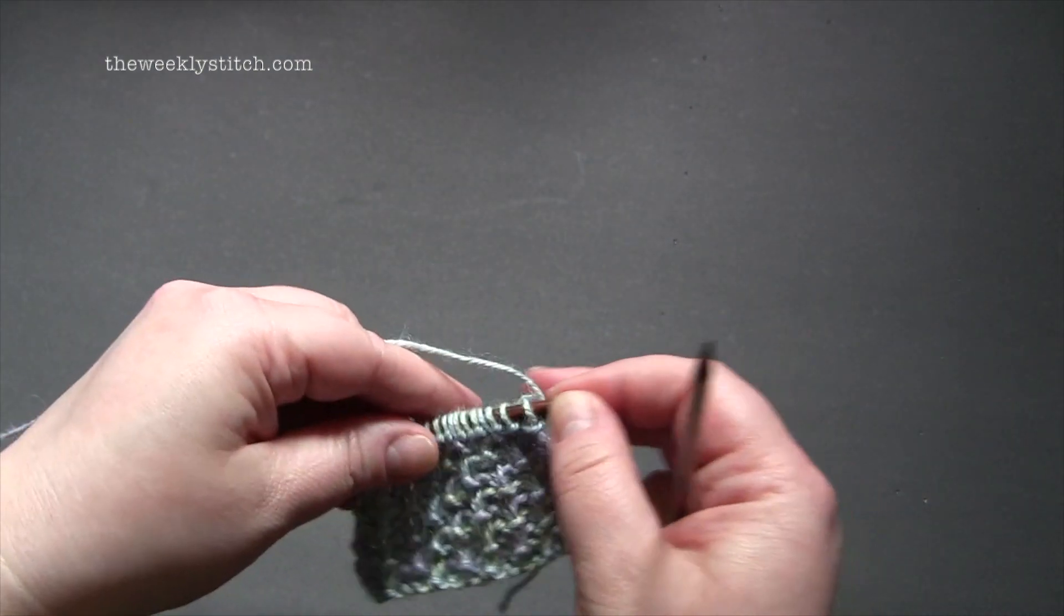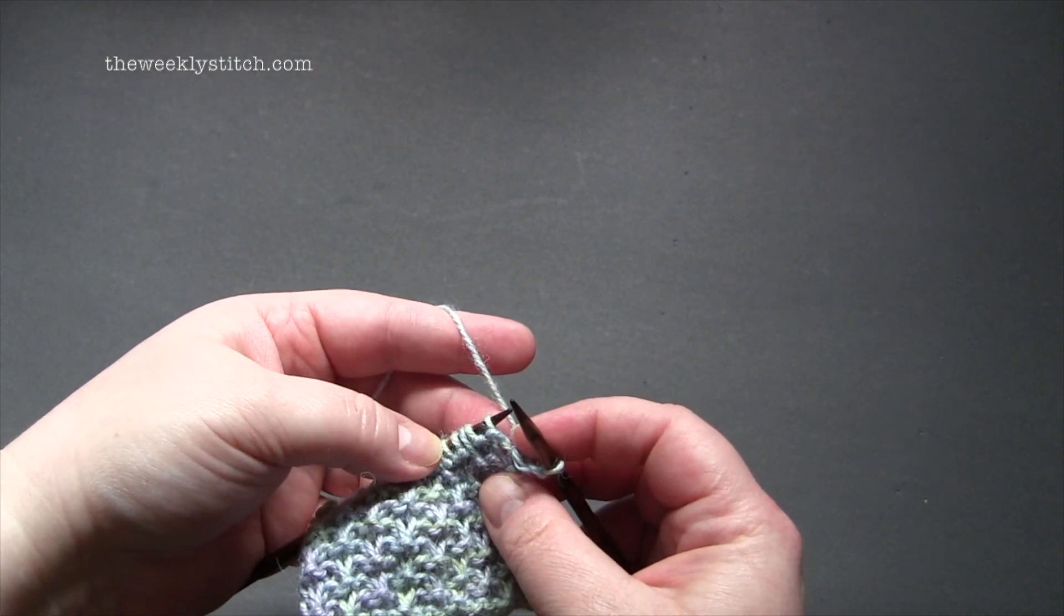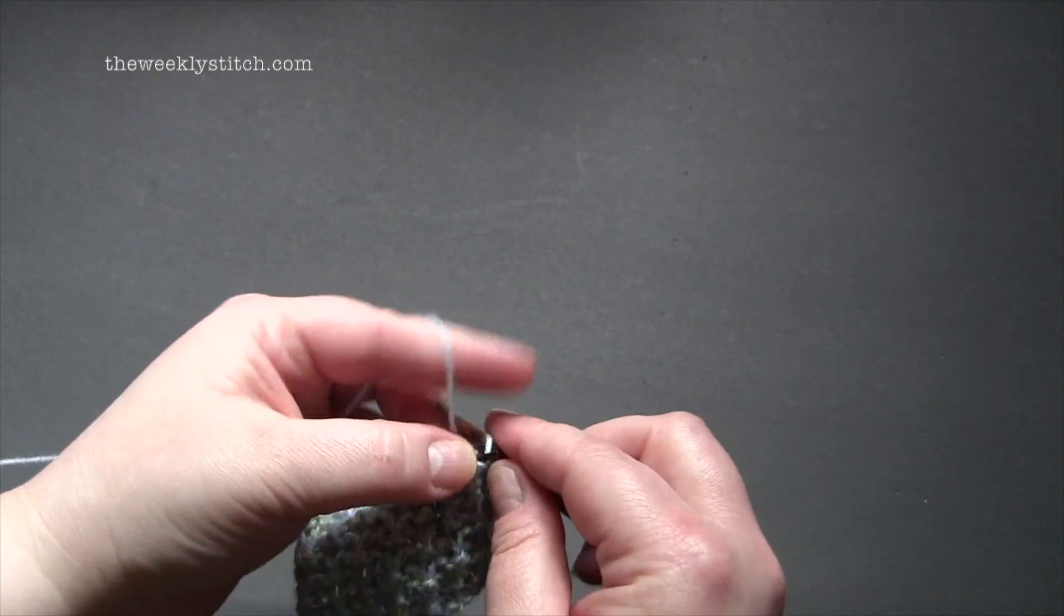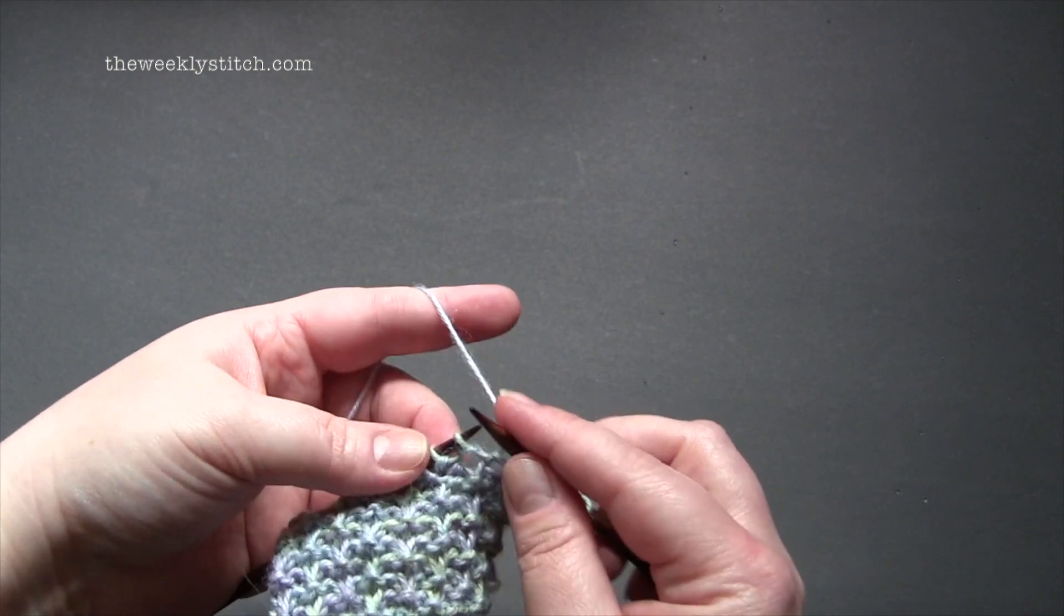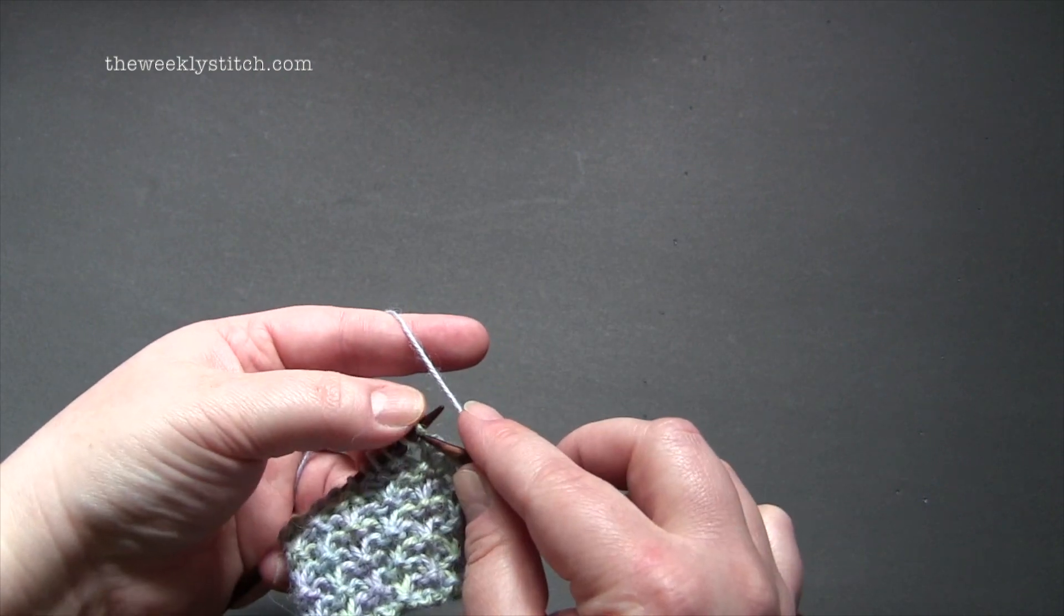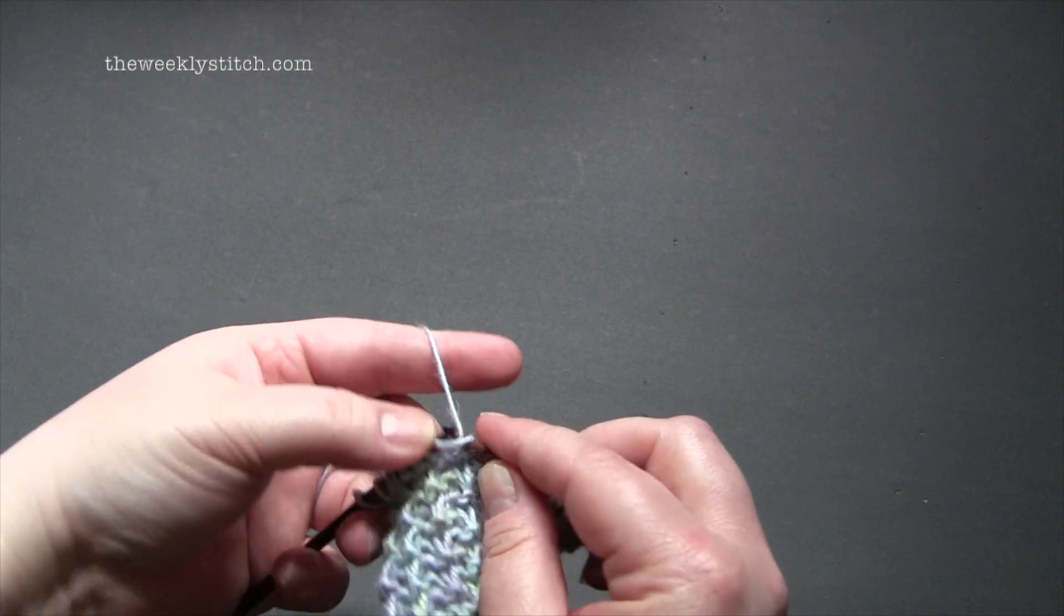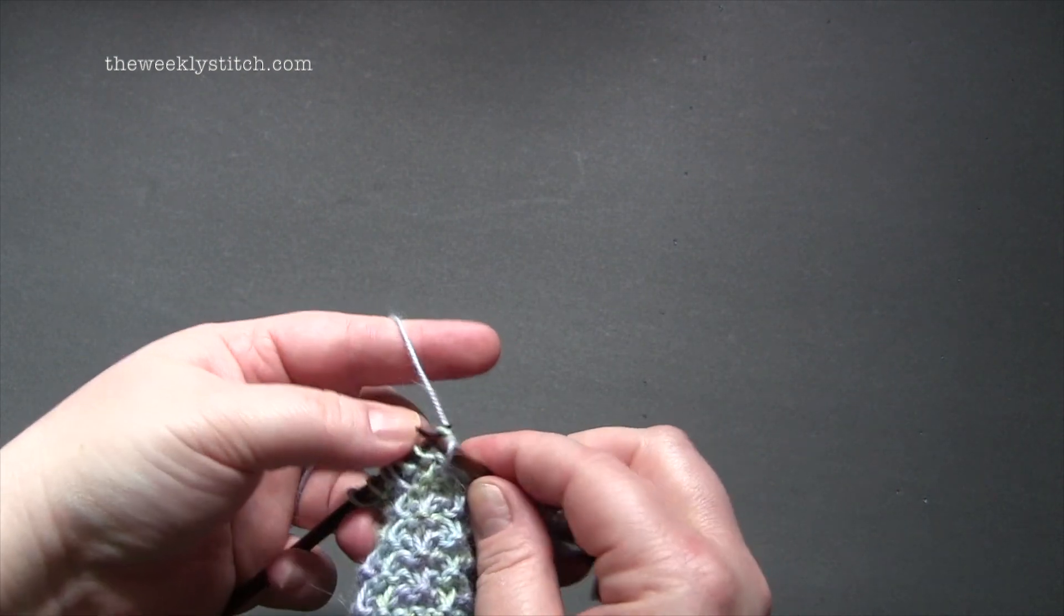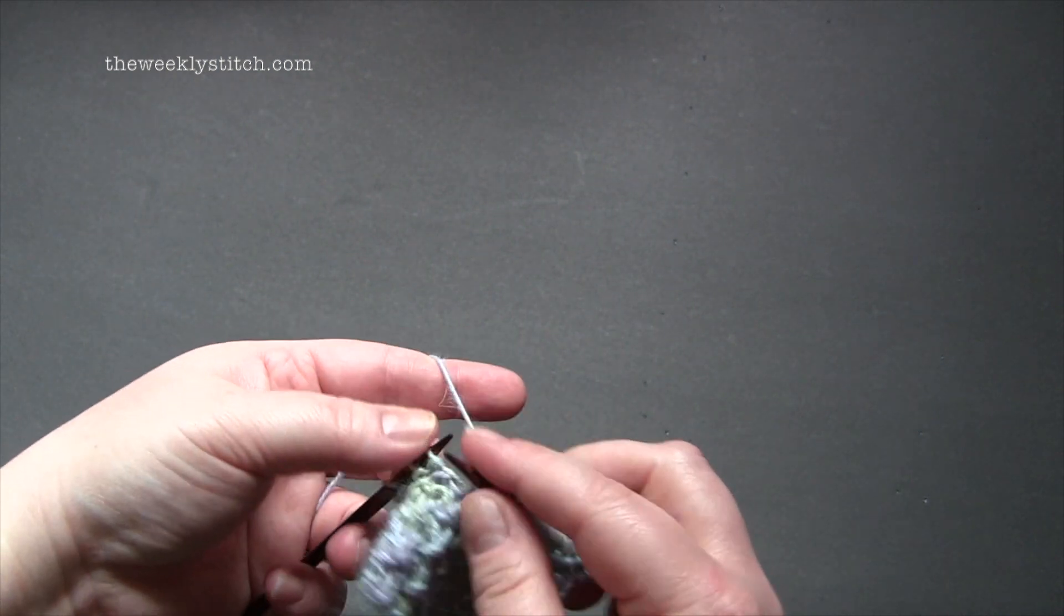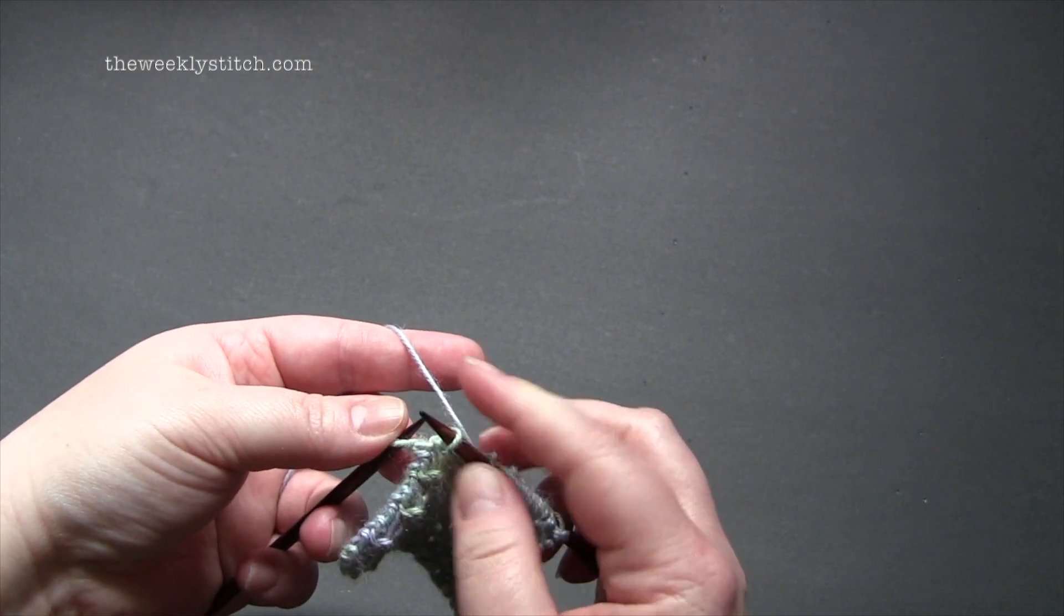For row three, you start by knitting the first stitch and then the repeat is slip one with yarn in back, knit three. And you'll end the row, or your last repeat, slip one with yarn in back and knit one.